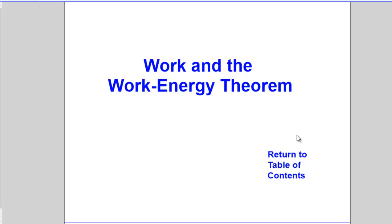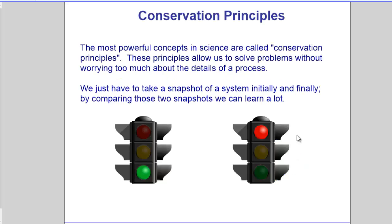If an object is experiencing an unbalanced force, it will cause a change in its motion — it can speed up or slow down. When we deal with the concept of work and energy, the most powerful concept in science, one of the most important across the board, is the concept of conservation. When something is conserved, it means the total net quantity of that quantity remains a physical constant. So if energy is conserved, it means the energy before and after stays the same.